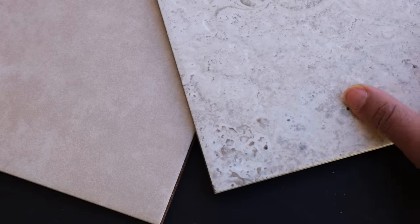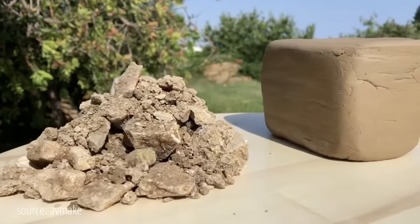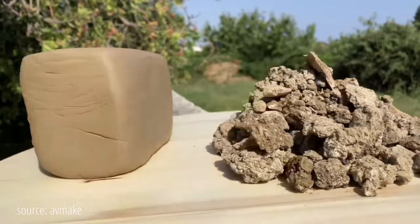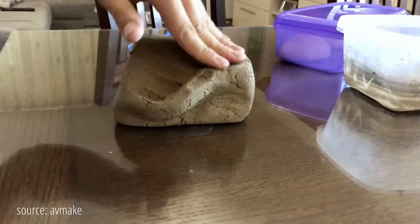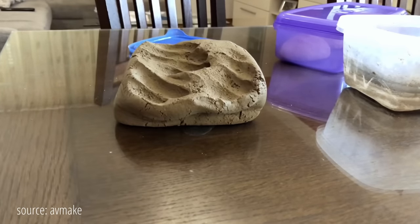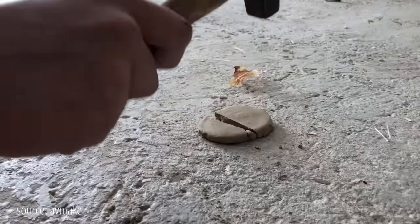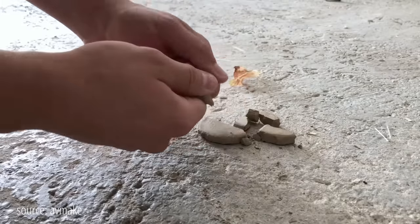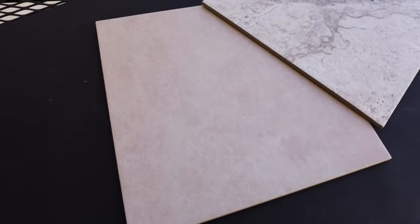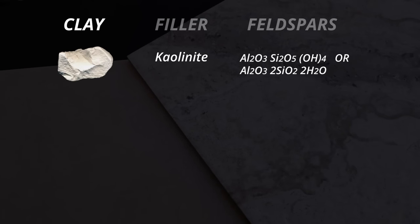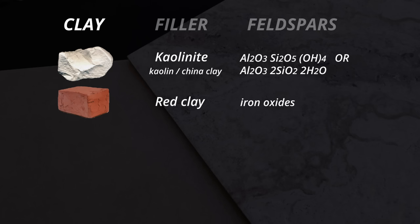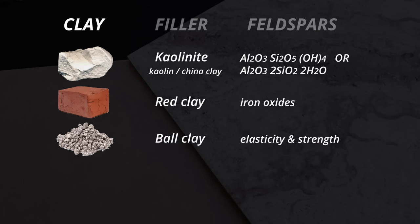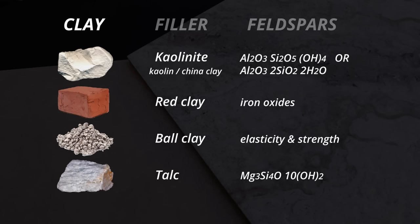Both of these are made of three main ingredients. The first and most important is clay, which is formed from the weathering of igneous rock. Clay minerals have layered crystalline structures. They develop plasticity when wet but become hard, brittle and non-plastic when dried or heated, allowing tiles to be formed into different shapes. One type of clay mineral used is kaolinite — rocks rich in it are called kaolin, white clay, or china clay. Red kaolinite contains iron oxides. Ball clay is used to improve elasticity and strength. Another type is talc, or hydrated magnesium silicate.